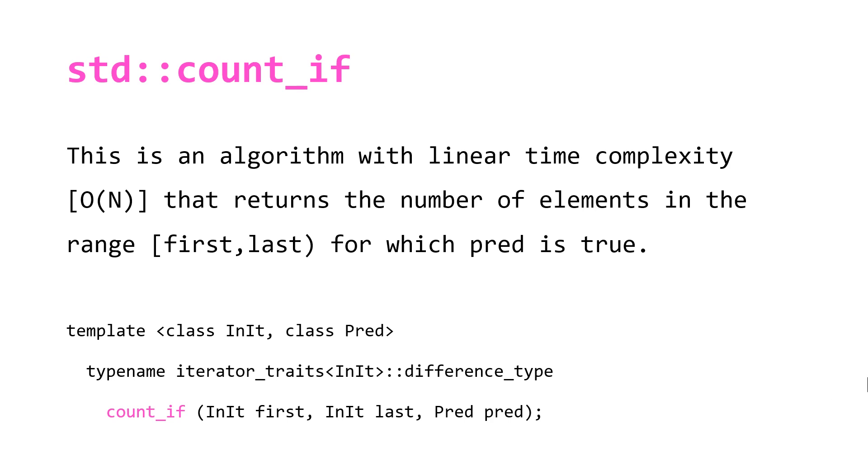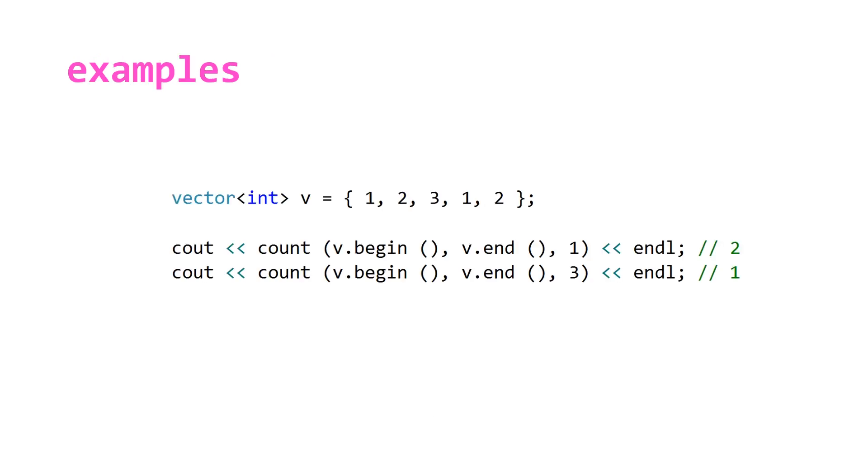Let's take a look at some very simple examples demonstrating how these functions work. In our first example we have a vector of integers with five values 1, 2, 3, 1, and 2. You can see it's pretty simple. We just passed two iterators that define our range and we pass in a value. So when you pass in 1 it returns 2 and when you pass in 3 it returns 1 the corresponding number of times we see those values in our data structure.